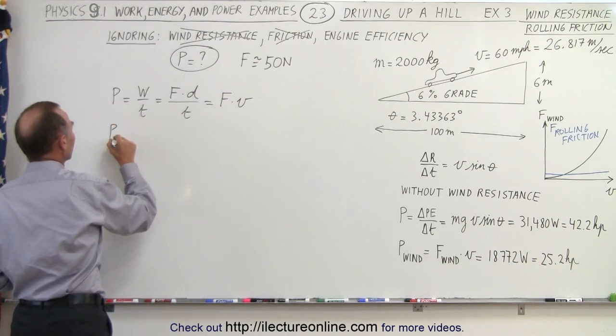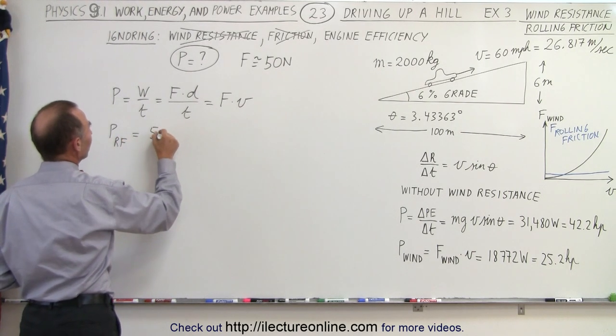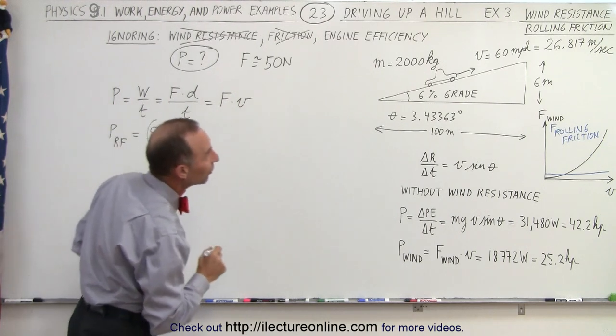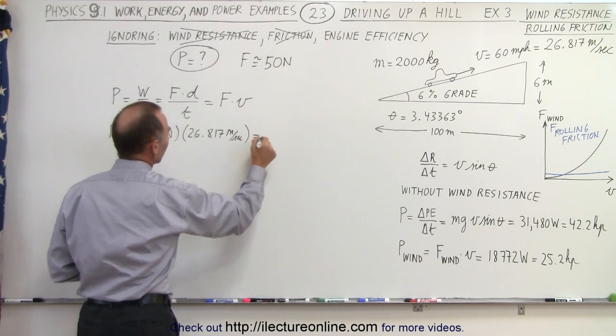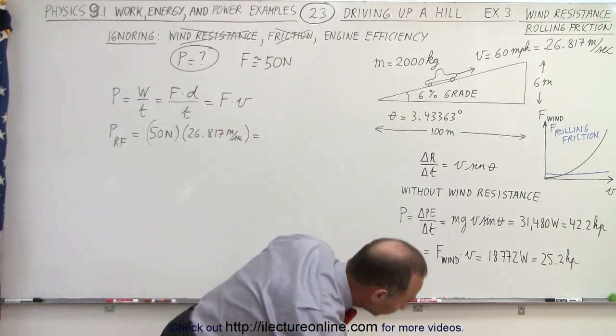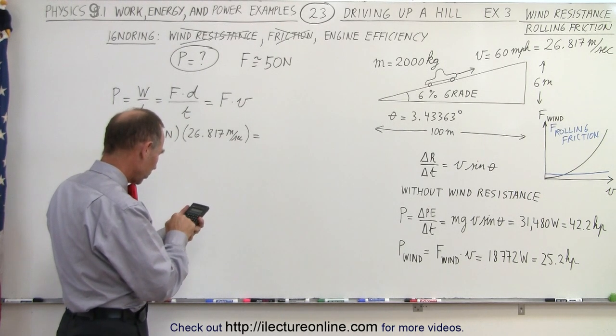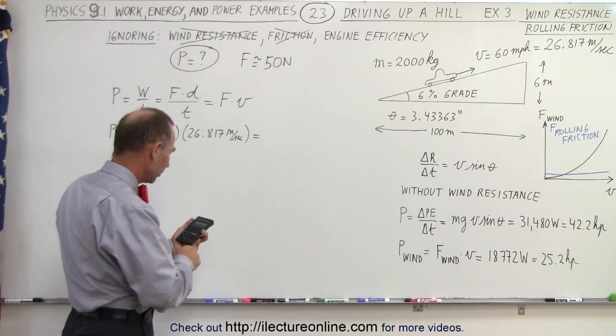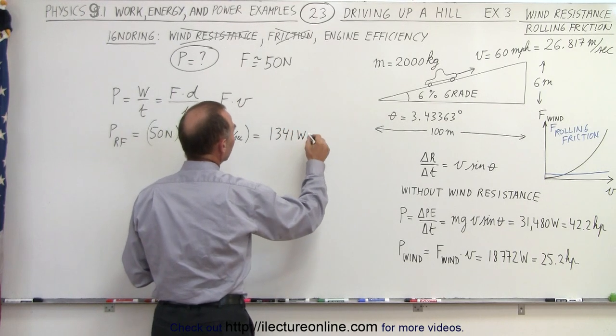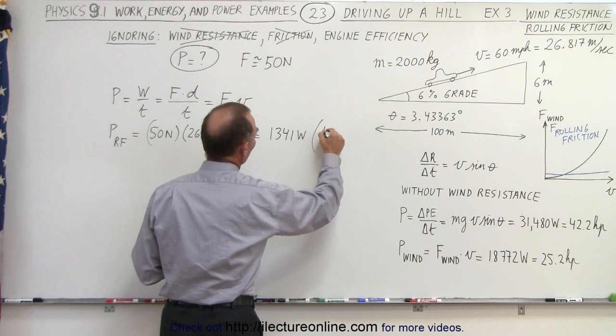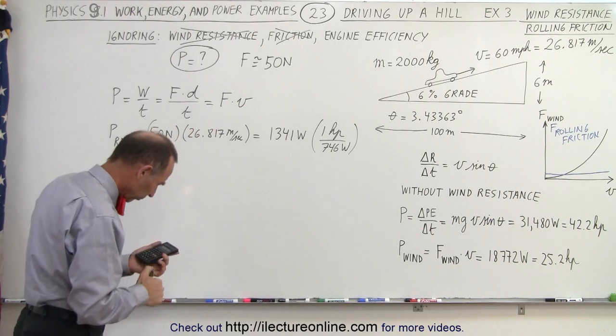In this case, the power for rolling friction is equal to the force of 50 newtons times the velocity of 26.817 meters per second. So 50 times 26.817 equals an additional 1341 watts. If we multiply that times one horsepower divided by 746 watts, we can express that in horsepower, which is about 1.8 horsepower.